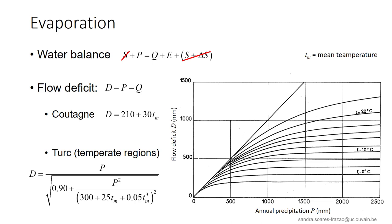From there, we can express D, the flow deficit, that represents the losses due mainly to evaporation, and thus an approximation of this evaporation. Coutagne and Turk have proposed formulas to estimate the evaporation losses, in which Tm is the mean temperature. The graph illustrates the deficit calculated with Turk's formula for different average temperatures and precipitation.